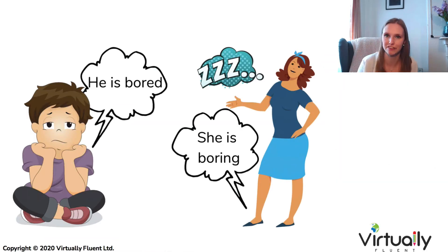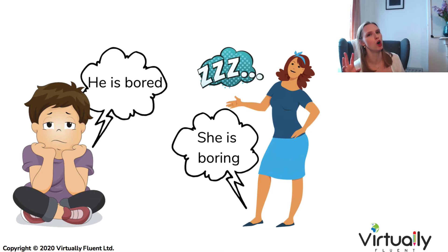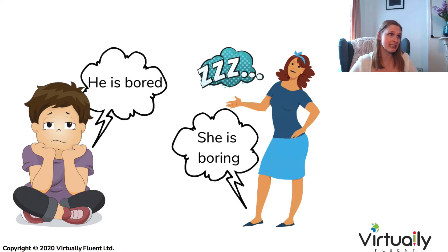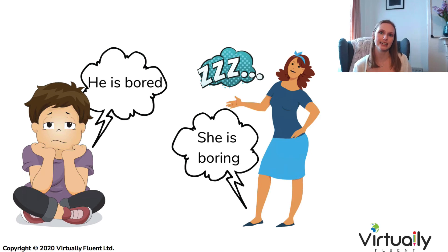This particular example is slightly different because I've used a person in both cases, but now hopefully you can understand: this girl is so boring because she's talking and talking, the topics are not interesting, and as a result this poor guy is sitting on the floor and he's really bored. There are hundreds of adjectives that use both the ED and ING endings.